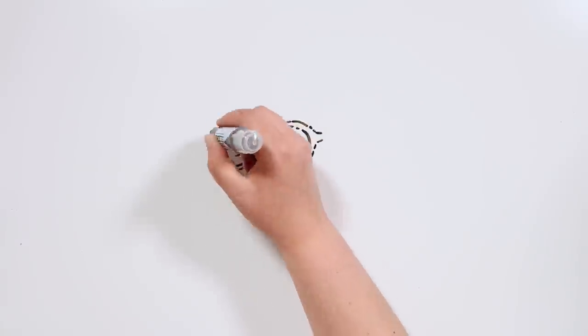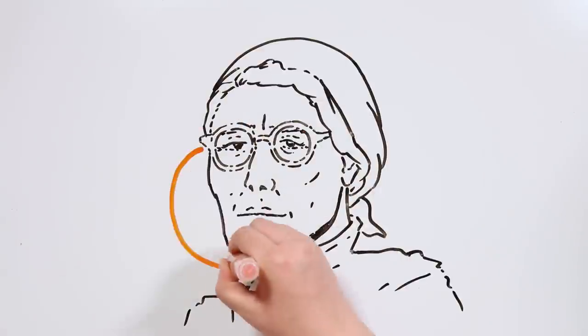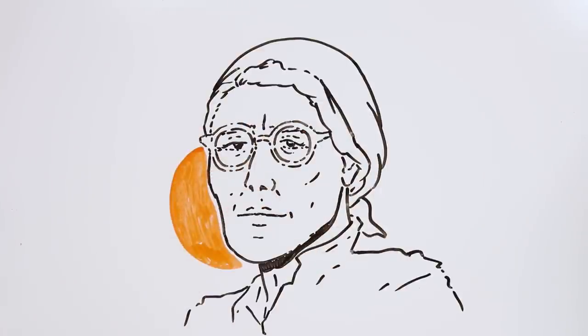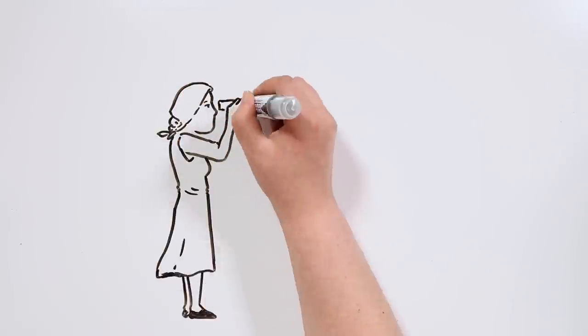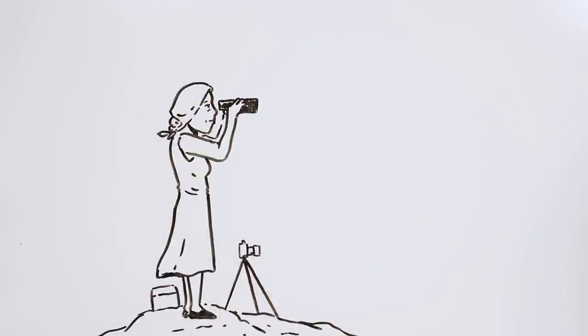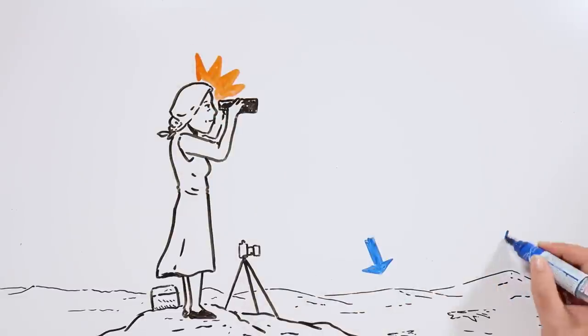After World War II, a teacher of German origin named Maria Reihe carried out the first formal studies of those geoglyphs. For half a century, until her death in 1998, Reihe played a fundamental role in conserving the Nazca Lines, a job which was then carried out by the local communities.